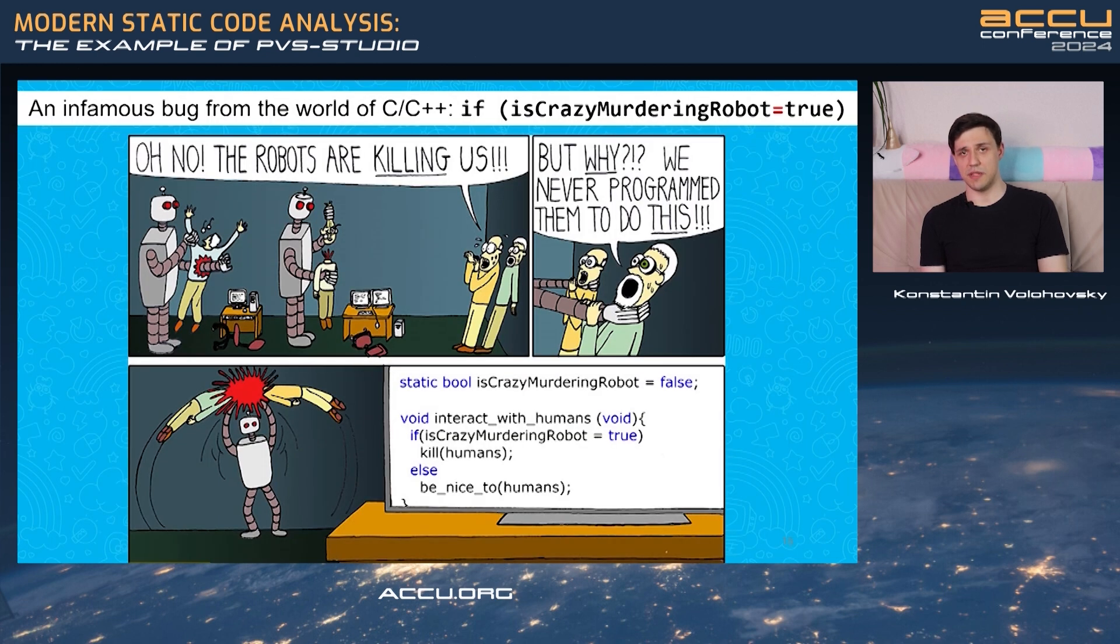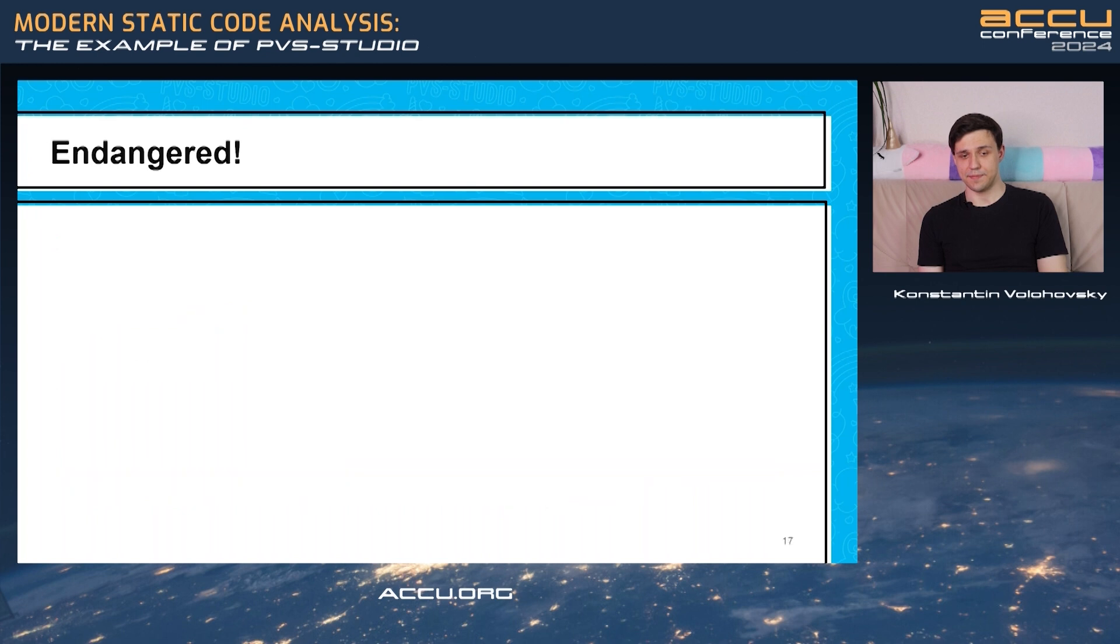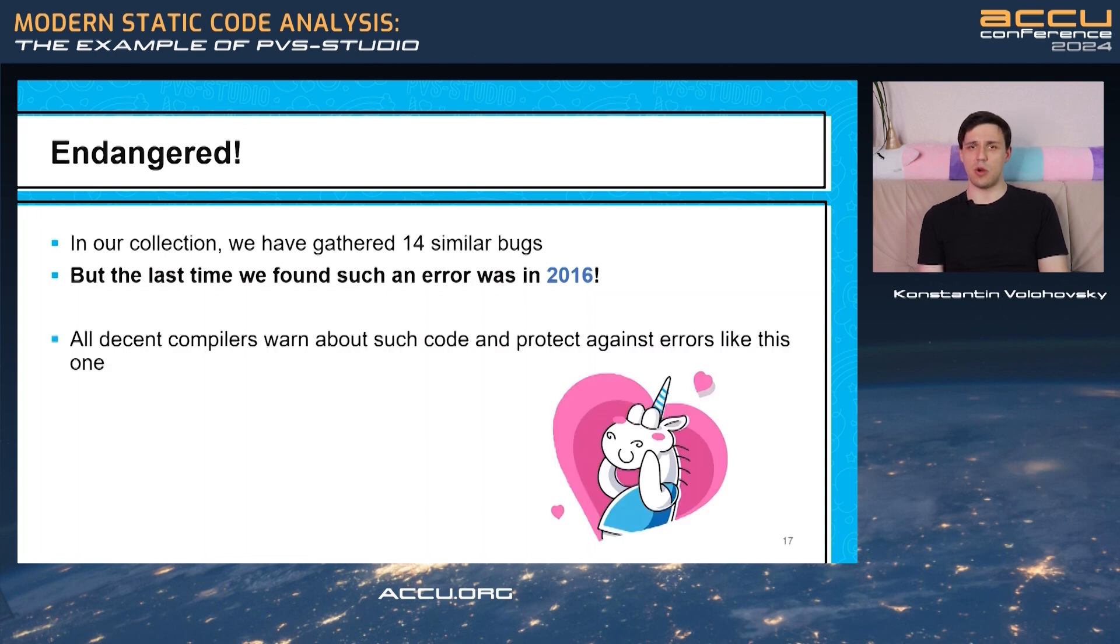For example, have you seen this famous meme? It portrays a pretty silly mistake where developer mix up assign and equals operators. And it may seem very trivial, but we really found errors like that in projects. For example, take a look at Intel AMT SDK project. The error as simple as it seems. But the fun part is, in our database of errors, where we collect mistakes from open source project, we found 14 bugs like this. But the last time we found such error was in 2016. I believe that one of the prime reasons for that is because all decent compilers nowadays warn about such code and protect you from making these mistakes.